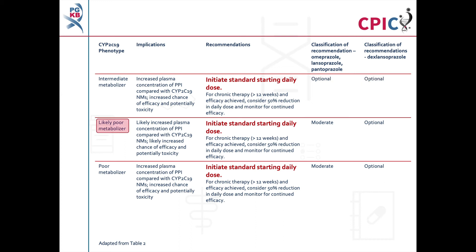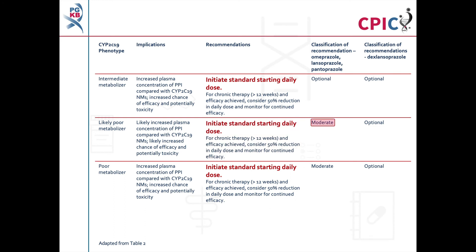Patients with a CYP2C19 likely poor metabolizer phenotype are likely to have increased PPI concentrations. This likely increases PPI efficacy and potentially increases the risk of toxicity. These patients can be given the standard starting dose. A dose reduction of 50% can be considered for patients on chronic therapy and where efficacy has been achieved. This is a moderate recommendation for lansoprazole, omeprazole, and pantoprazole, and an optional recommendation for dexlansoprazole.